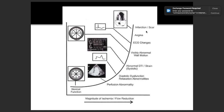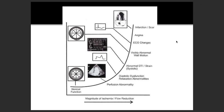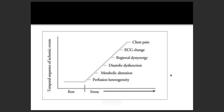This is why we ask for other tests. Myocardial perfusion scan is placed very high, compared to other tests. Looking at the temporal sequence of ischemic events — rest versus stress — the order is: first perfusion heterogeneity, then metabolic alteration, then diastolic dysfunction, then regional dyssynergy, then ECG changes, and finally chest pain.